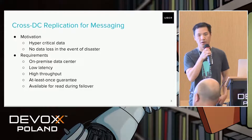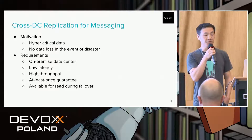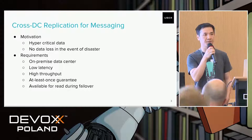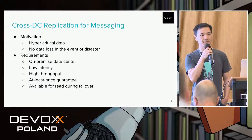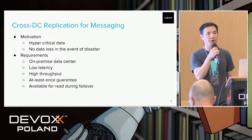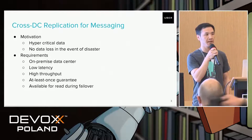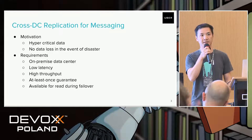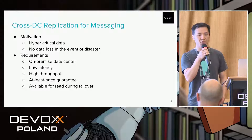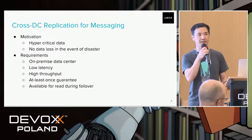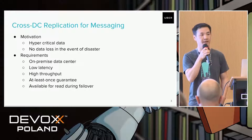So why do we do cross-DC replication? Messaging systems are very popular, and the data at Uber is widely used by many services, including some hypercritical use cases. For those use cases — for example, financial data or payment — we need to guarantee no data loss even in the event of a disaster. A disaster really means something like a data center sinking into the ocean. In that case, we still need to guarantee no data loss, which means we need to replicate our data across to our other data center.